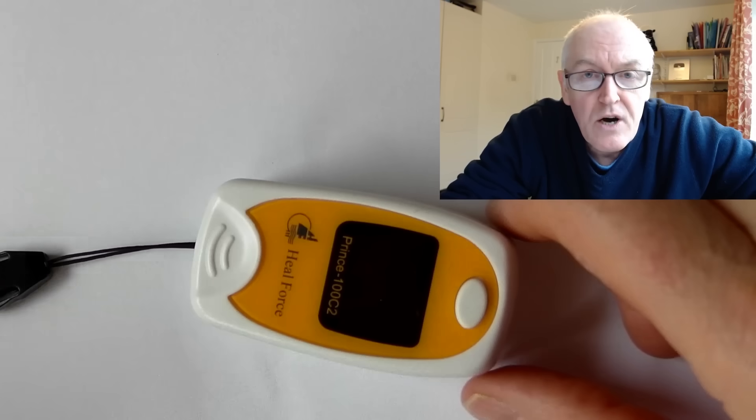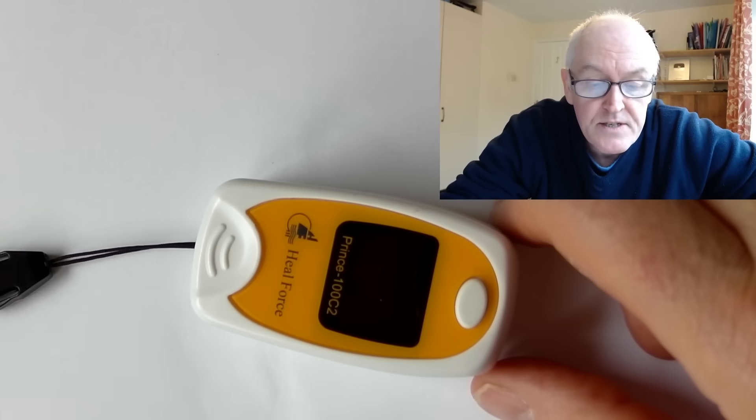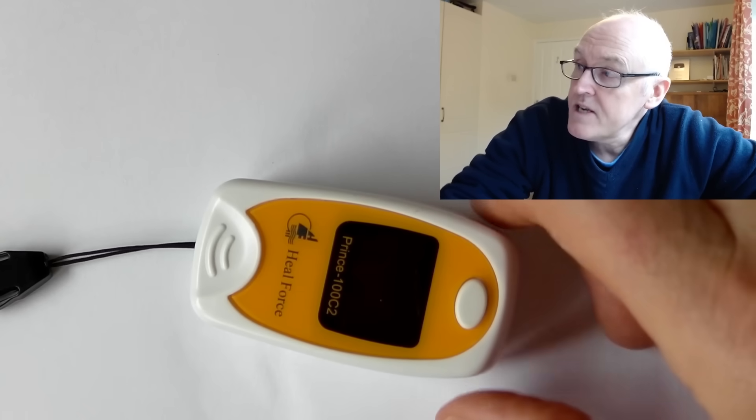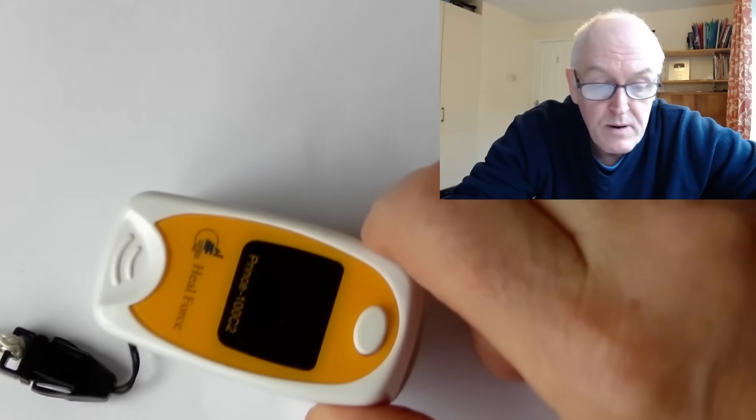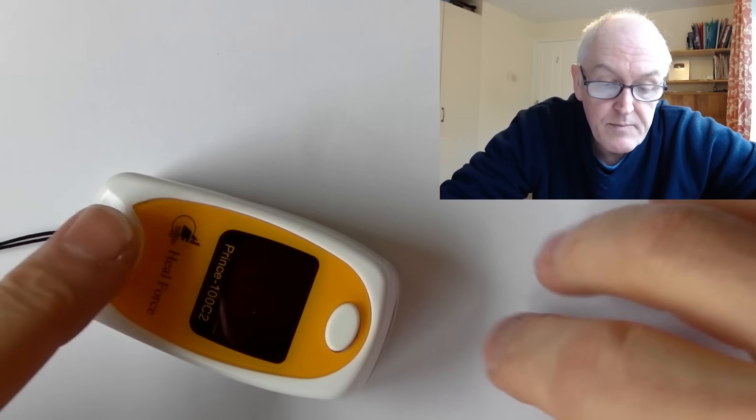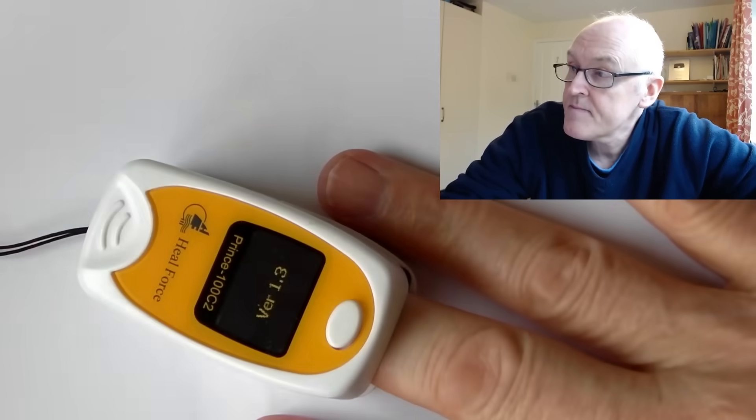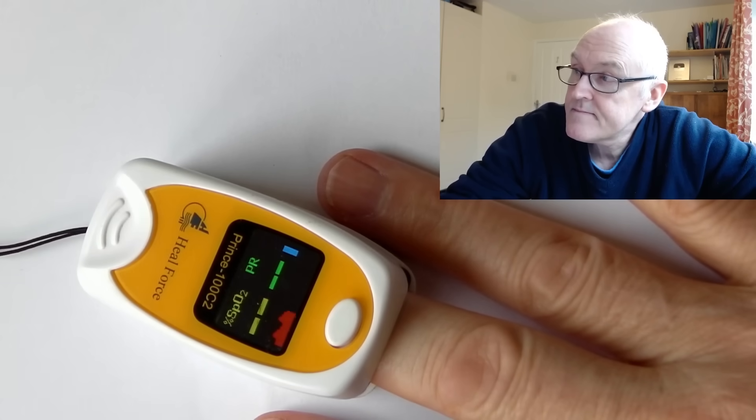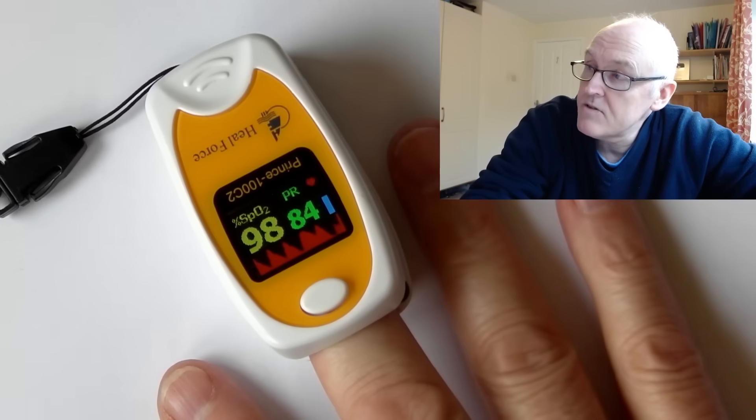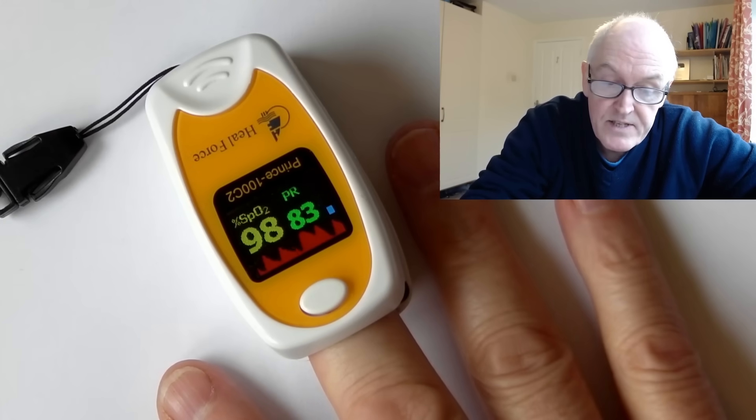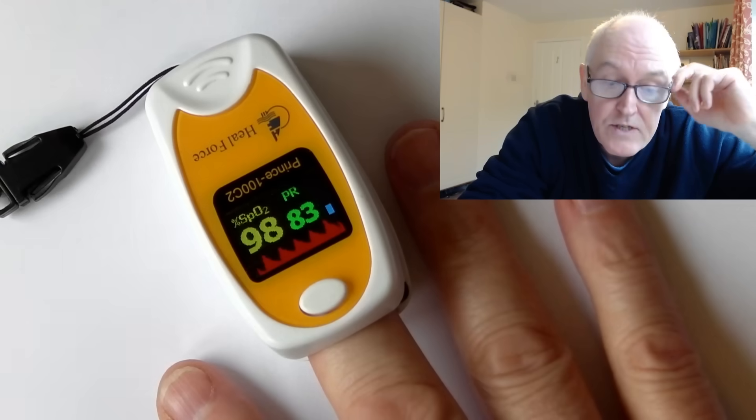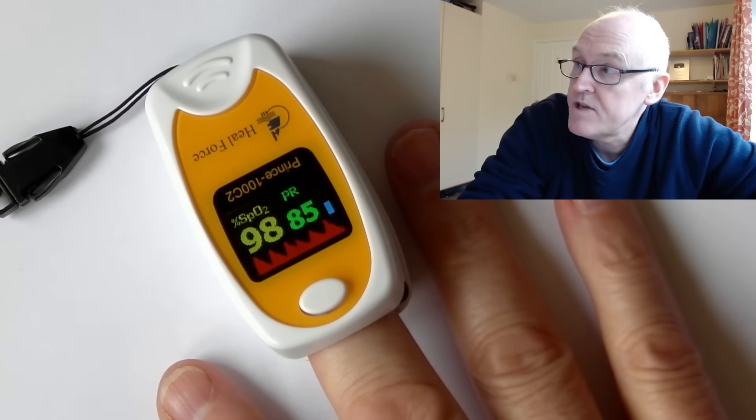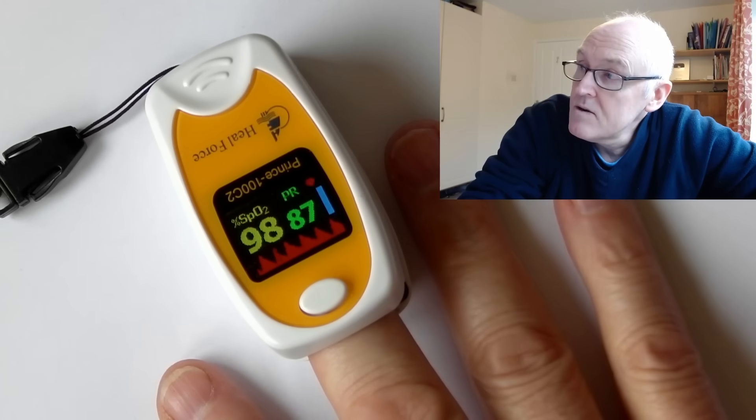Today I'm going to teach you how to measure oxygen saturations. To do that we need one of these oxygen probes. We open it up, put in a finger, and we see that my oxygen saturations are currently 98%. SpO2 is saturation of peripheral oxygen in my finger, and my current pulse rate PR is shown here.